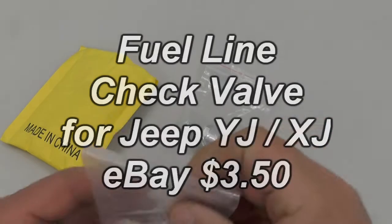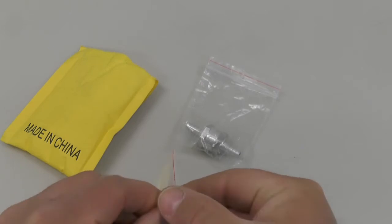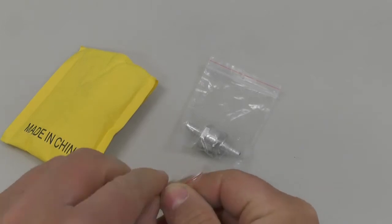These are going to be used on a 1991 Jeep Wrangler YJ to stop the fuel from draining back into the fuel tank.